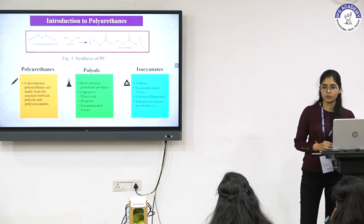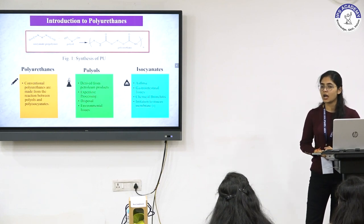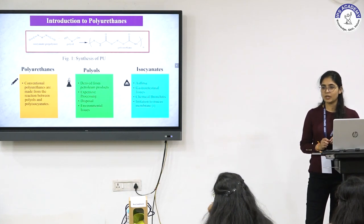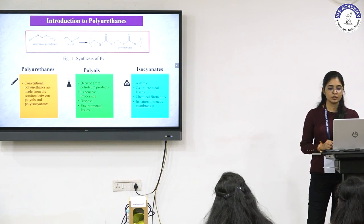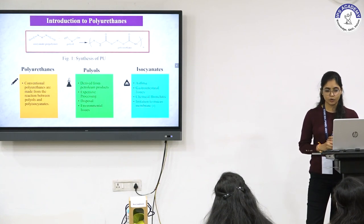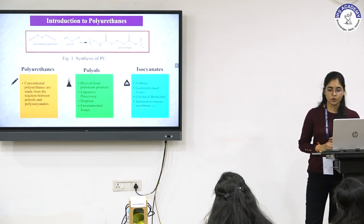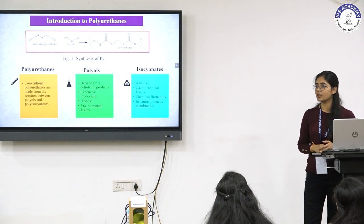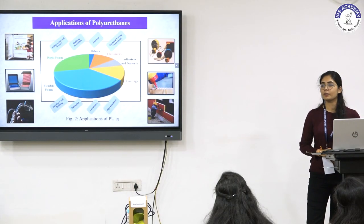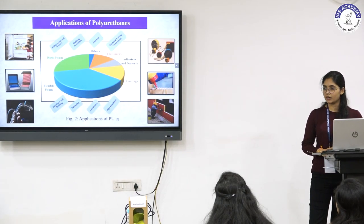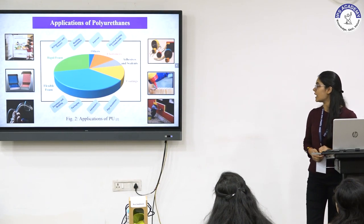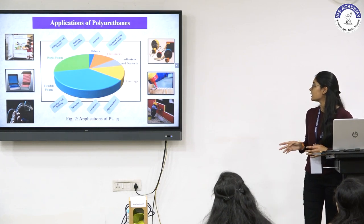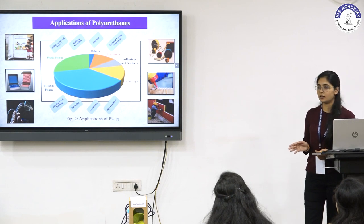Polyols used for polyurethane synthesis are derived from petroleum materials. Their expensive processing is a major concern, including disposal and environmental issues. These isocyanates are highly toxic and cause asthma, gastrointestinal issues, chemical bronchitis, and irritation to the mucous membrane. Despite these disadvantages, polyurethanes are widely used in the form of rigid and flexible foams — as shown in the pie chart — followed by coatings, adhesives, sealants, and elastomers.